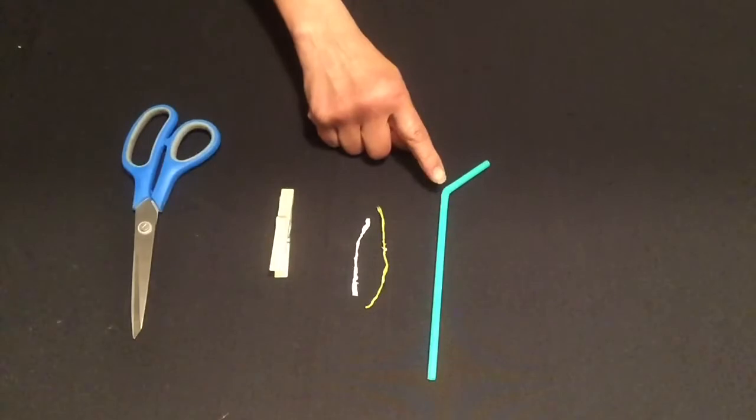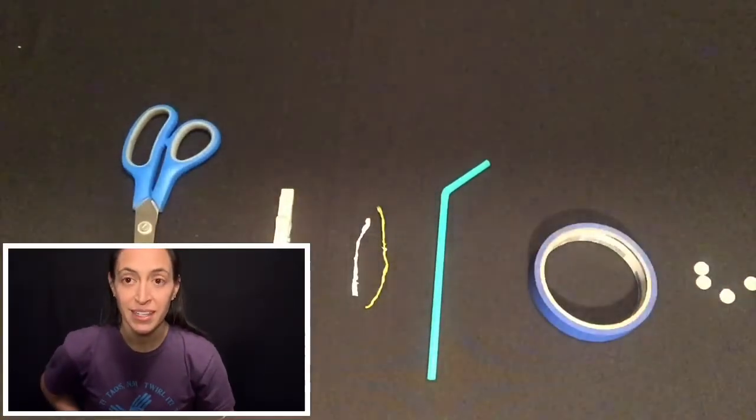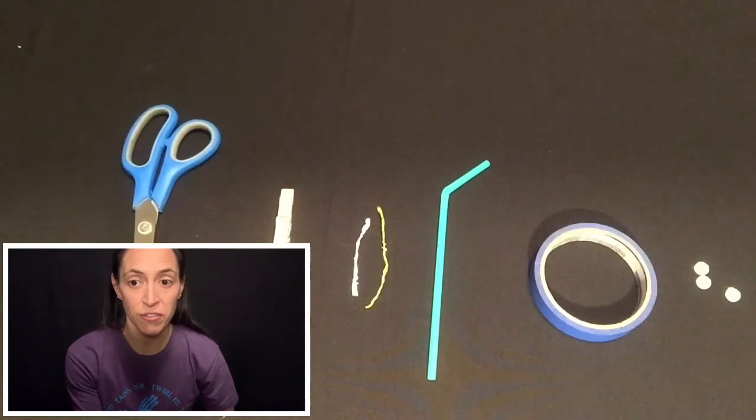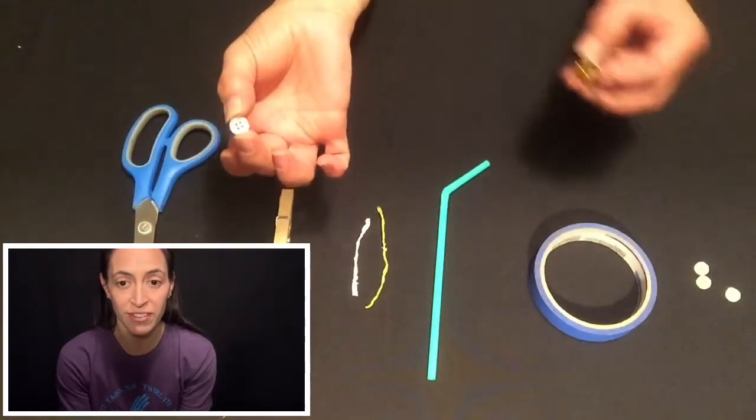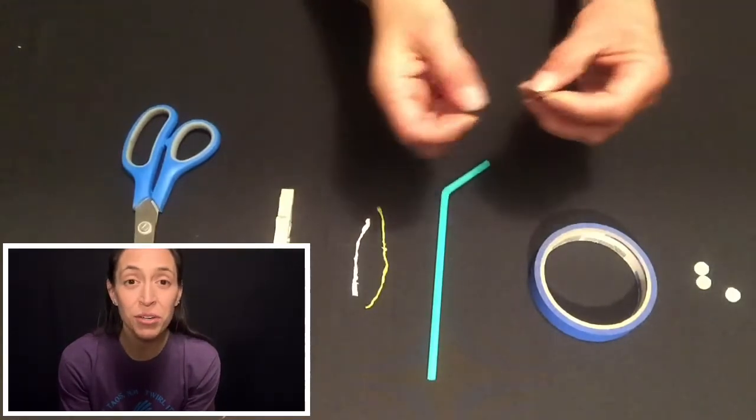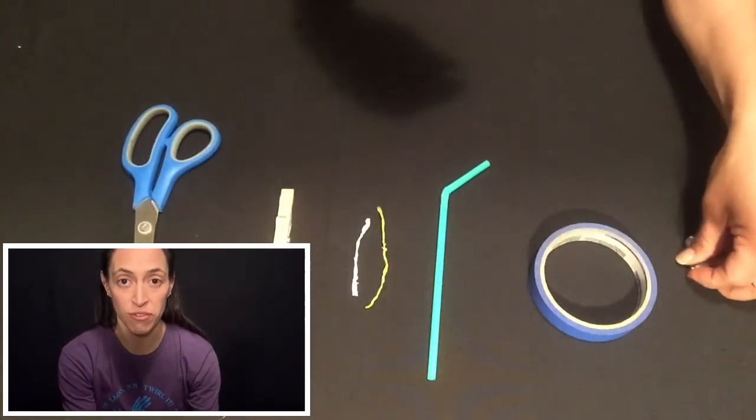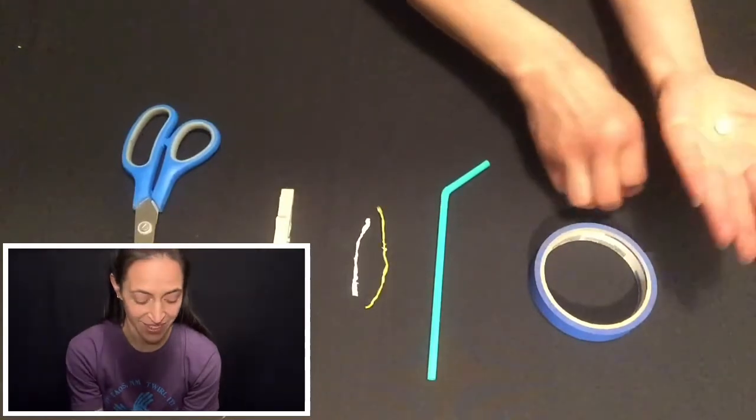Alright, we're going to need a few things. You're going to need some scissors, a clothespin, two twist ties, a straw (and it doesn't matter if it has that little bend or not), you're going to need four buttons, and some tape. Now it doesn't matter if your buttons are four-hole or two-hole or even have this kind of little buttonhole down at the bottom—you can use any of those. The only thing you need to really be sure of is that all four of your buttons are the same size.